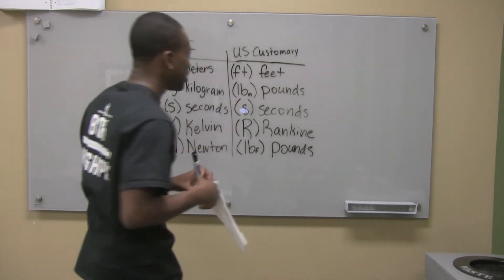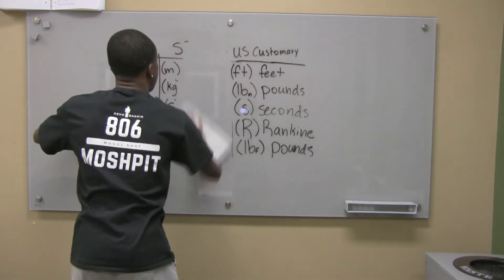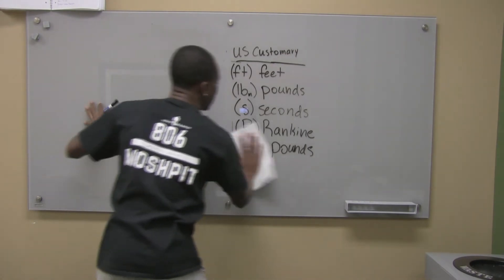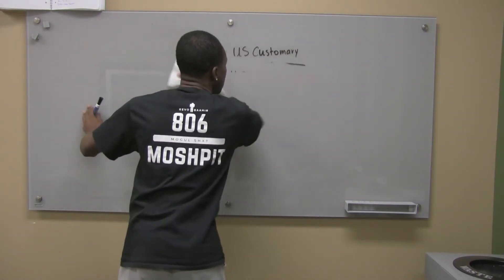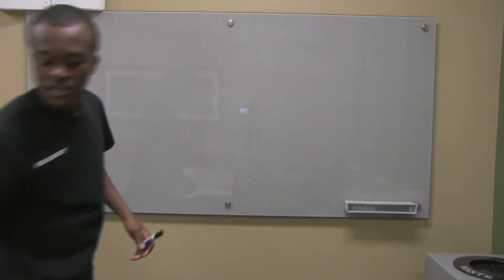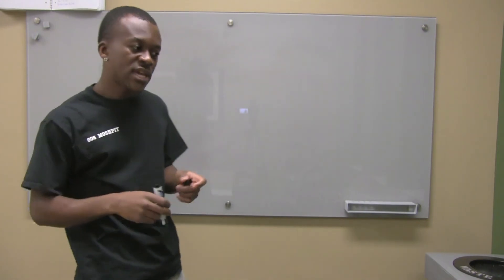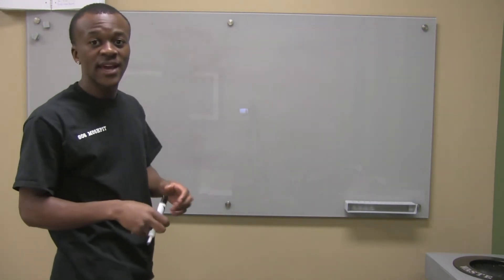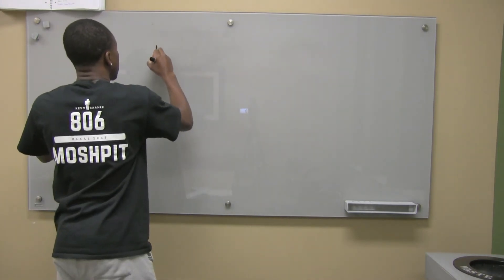They used to say degrees Kelvin, but just know that that's why they don't use degrees Kelvin. Now, these units can be used to describe other units. Now, remember how I mentioned pressure before? We can have, for example, in the SI, we have pressure, which is force over area.